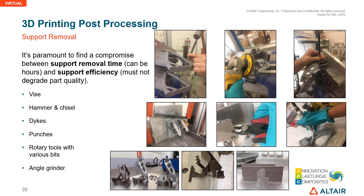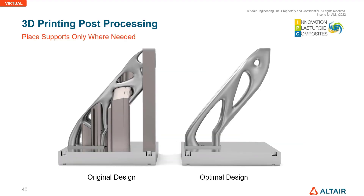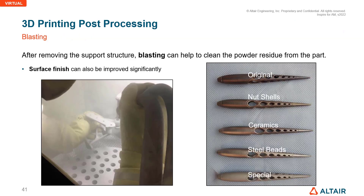Support removal can be achieved using various methods including vise, hammer and chisel, die punches, rotary tools with various bits, and angle grinder. A slide shows the same design with two configurations: the original design requiring many supports versus an optimized design without any supports. Blasting is another process used to remove powder from the surface of a printed part, using plastic beads, walnut shell, ceramic beads, steel beads, or special blade beads.